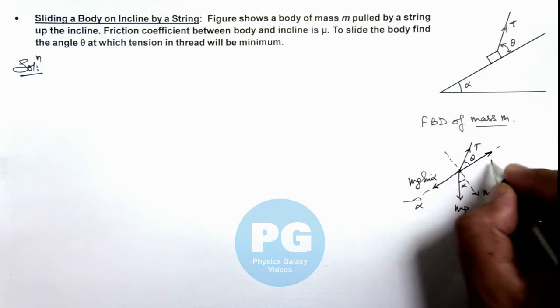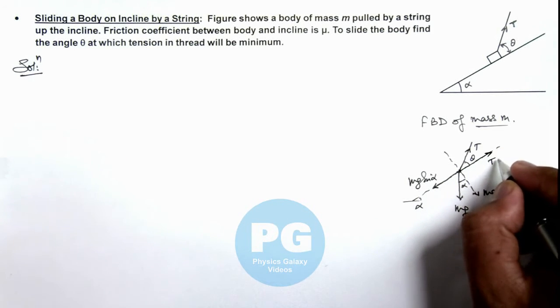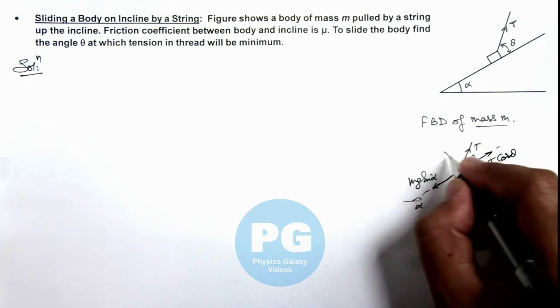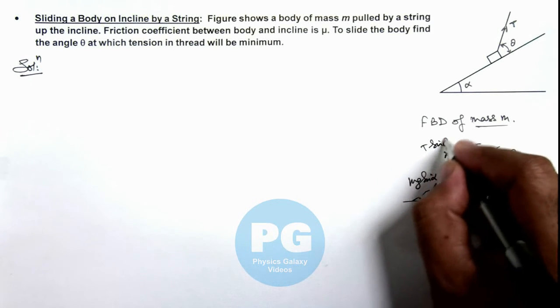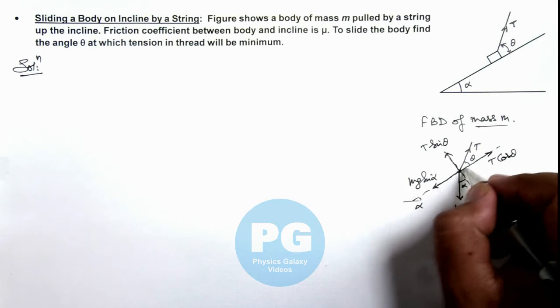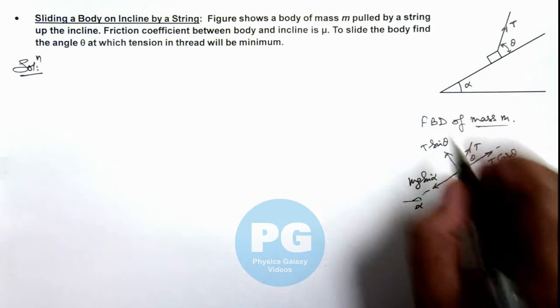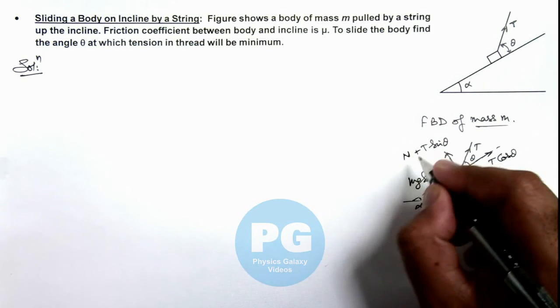So we can also resolve the components of tension which are T cos θ and here it is T sin θ, as well as the normal reaction on the body due to incline will be in the same direction so we take it plus N.